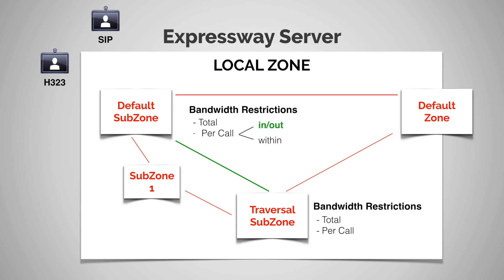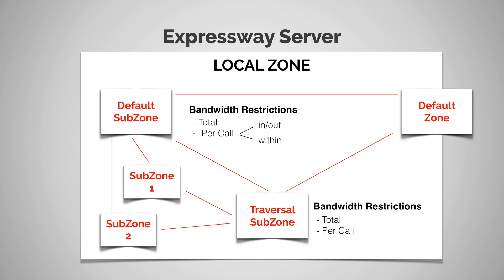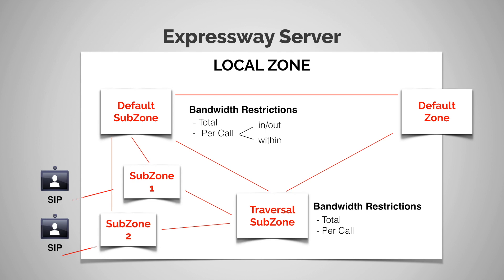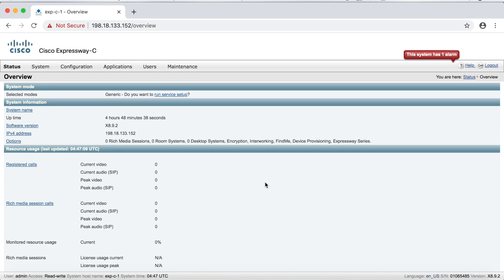One more example: you have to keep in mind not just where the endpoints are registered, but what the media path is going to be when they make a call. Say we've created subzone two and we have an endpoint in subzone one calling an endpoint in subzone two. We need to look at the in/out bandwidth restrictions for both subzone one and subzone two, but we also need to consider that the media path goes through the default subzone — so we have to consider the in/out restrictions for the default subzone as well.